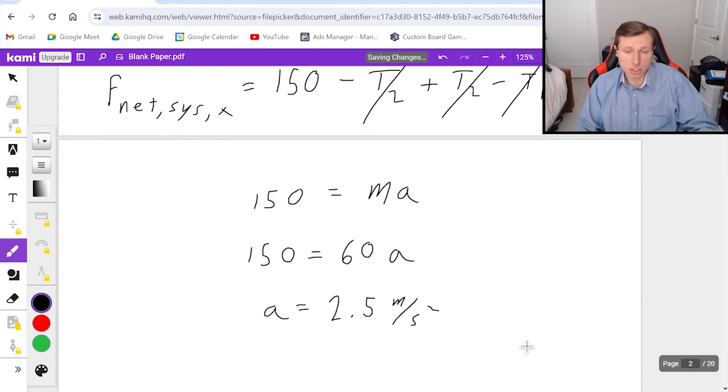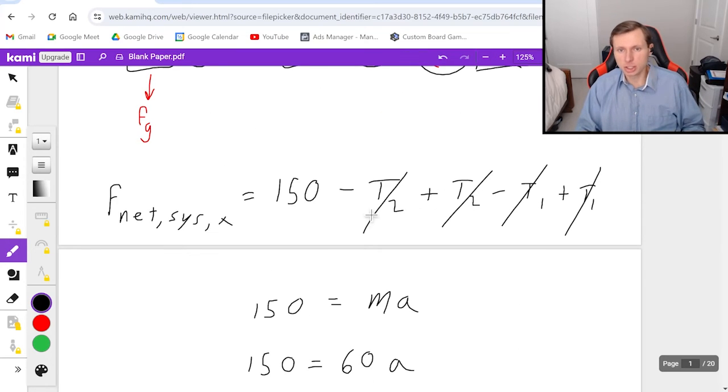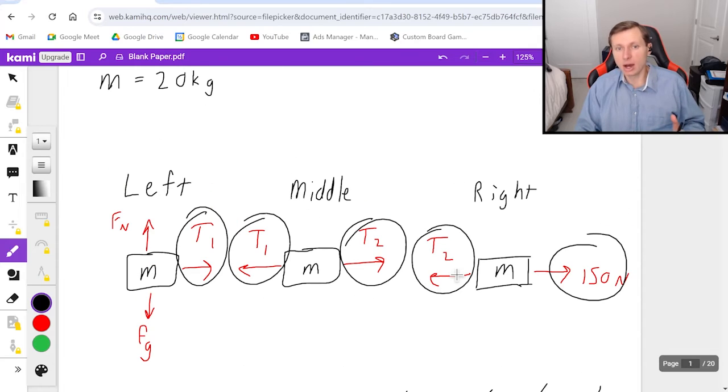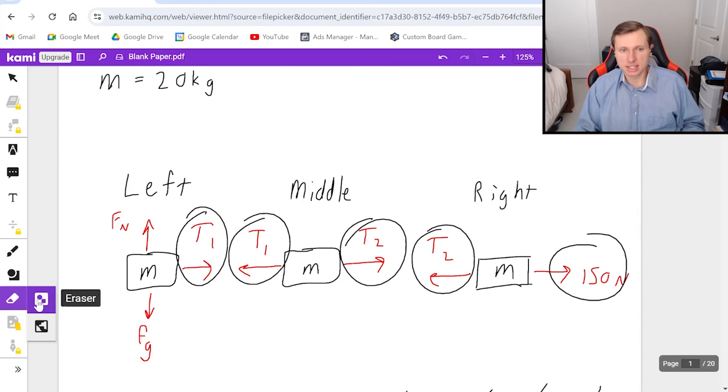You'll notice I'm not circling this answer, because I wanted to find the tension, tension one and tension two. But you'll notice tension one and tension two both canceled. So why did we look at the system if it just canceled? The reason why we looked at the system is because you just found the acceleration. If you don't know the acceleration, then you can't find T1 and T2. But now that we have the acceleration, now we're going to look at the boxes individually.